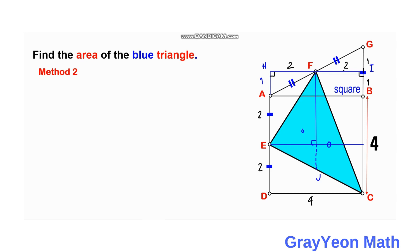Since this is the hypotenuse of triangle EDC, and it is divided by J into 2, this length is 1, this becomes 1, and this becomes 1. And this is 3, and this is 2, and this perpendicular height is actually 2 units.